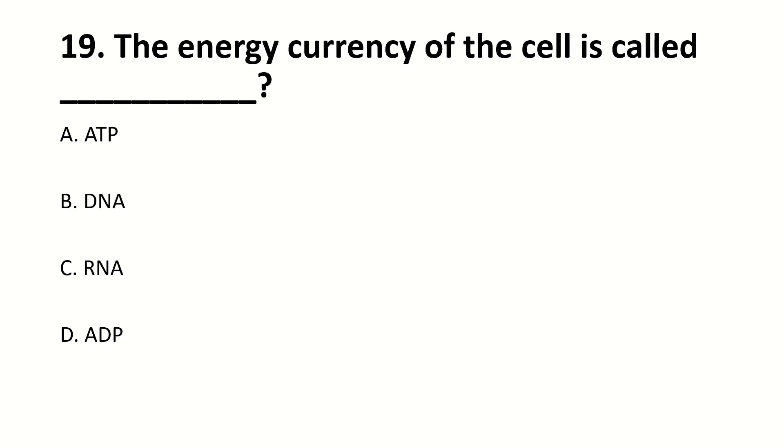The energy currency of the cell is called ___. The right answer is A: ATP.